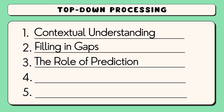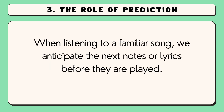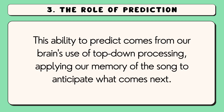Thirdly, top-down processing allows us to predict future events based on past experiences. For example, when listening to a familiar song, we anticipate the next notes or lyrics before they are played. This ability to predict comes from our brain's use of top-down processing, applying our memory of the song to anticipate what comes next.